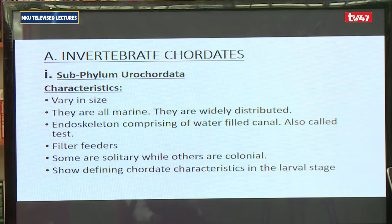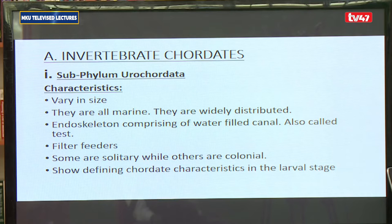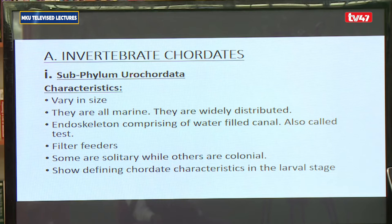Looking at the organisms in the phylum chordata, we begin with the invertebrate chordates. Invertebrate chordates refers to the subphylum urochordata and the subphylum cephalochordata, who tend to be in the phylum chordata but do not have a vertebral column. On invertebrate chordates, we begin with the subphylum urochordata. For urochordates, they tend to have the basic characteristics that we said the chordates have in the larval stage.